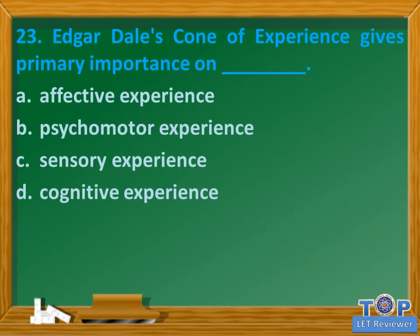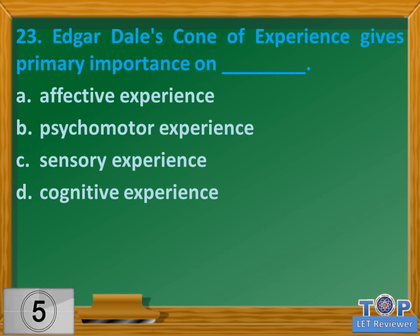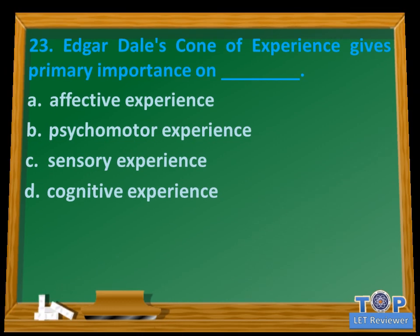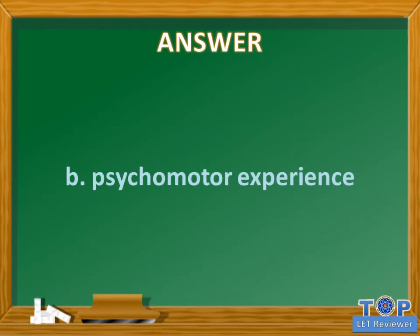Question number twenty-three: Edgar Dale's cone of experience gives primary importance on what? A. Effective experience. B. Psychomotor experience. C. Sensory experience. D. Cognitive experience. Answer: B. Psychomotor experience.